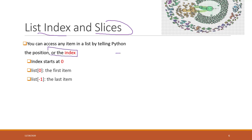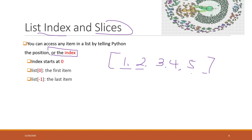Here we have a list: one, two, three, four, and five, separated by commas. Remember in a list the order matters. So the first item is number one, the second item is number two, and the last item is number five in this list.